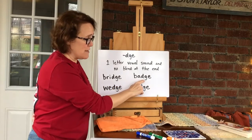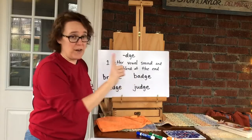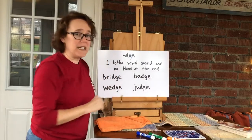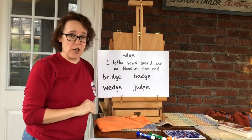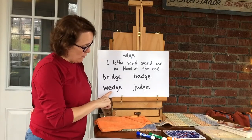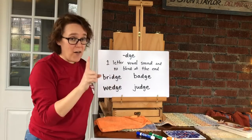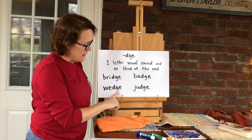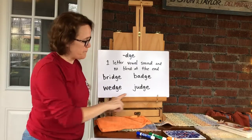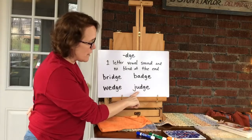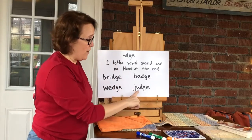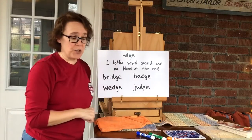This word, badge — one-letter vowel, so D-G-E spells the J sound. Another example: wedge — one-letter vowel, D-G-E says the J. Judge — same thing, one-letter vowel, D-G-E spells the J.